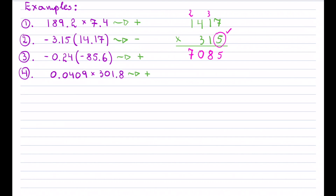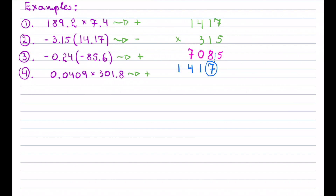Now moving over to the 1. Multiplication by 1 is simple — it just repeats itself. Notice that I start the 7 underneath the 1 because it's in the tens place value, so you shift it over.